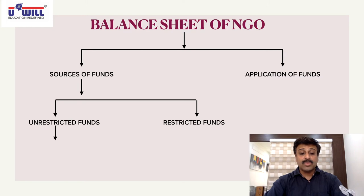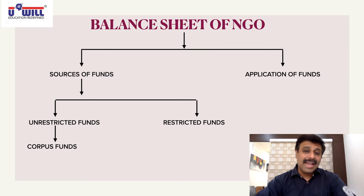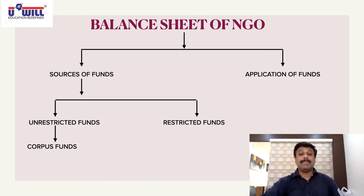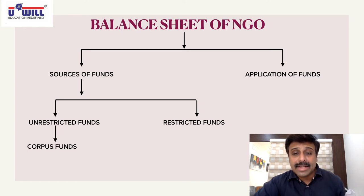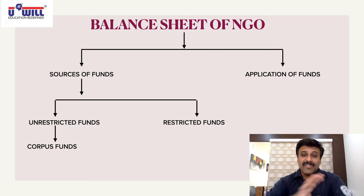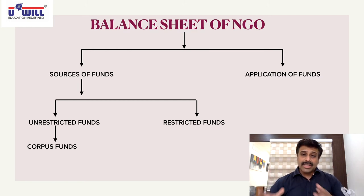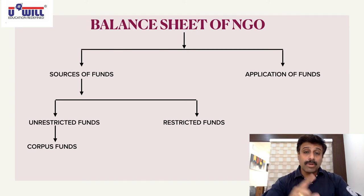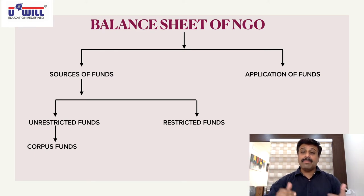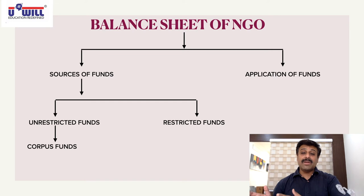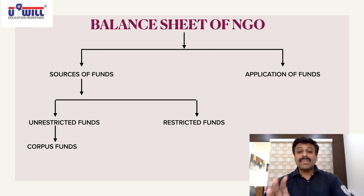Within unrestricted funds, the first item is corpus fund. This is like capital in a regular balance sheet, but we cannot call it capital because there are no owners of an NGO. When promoters start the NGO, they bring some initial amount — maybe five thousand, ten thousand, or one lakh — depending on their capacity. That amount is called corpus fund, and it keeps growing over time as promoters contribute whenever needed.